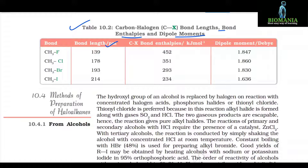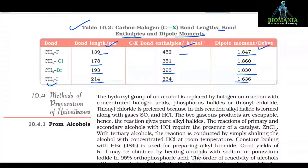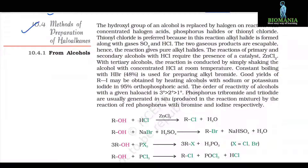Here you can see table 10.2: carbon-halogen bond lengths, bond enthalpies, and dipole moments. CH3F: bond length 139 pm, bond enthalpy 452 kJ/mol, dipole moment 1.847 D. CH3Cl: bond length 178 pm, bond enthalpy 351 kJ/mol, dipole moment 1.860 D. CH3Br: bond length 193 pm, bond enthalpy 293 kJ/mol, dipole moment 1.830 D. CH3I: bond length 214 pm, bond enthalpy 234 kJ/mol, dipole moment 1.636 D. 10.4 Methods of preparation of haloalkanes.